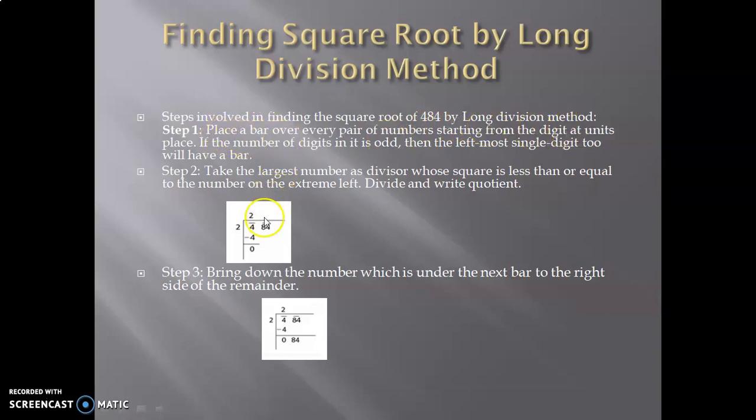Step 1: Place a bar over every pair of numbers starting from the digit at units place. If the number of digits is odd, then the leftmost single digit too will have a bar. Step 2: Take the largest number as divisor whose square is less than or equal to the number on the extreme left. Divide and write the quotient.